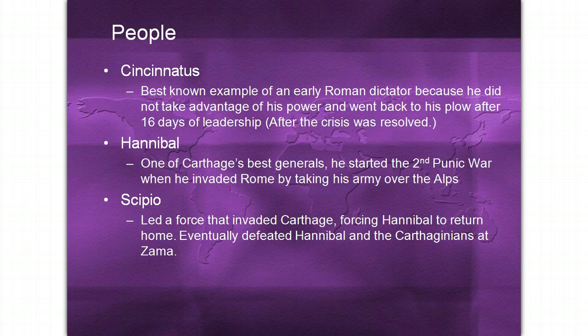Hannibal was one of Carthage's best generals. He started the Second Punic War when he invaded Rome by taking his army over the Alps. Scipio led a force that invaded Carthage, forcing Hannibal to return home. He eventually defeated Hannibal and the Carthaginians at the Battle of Zama.